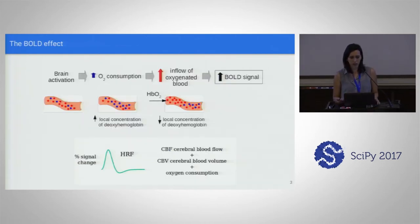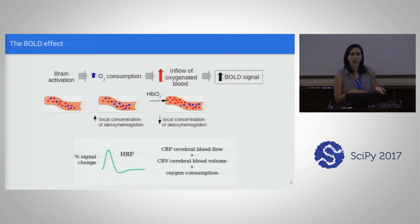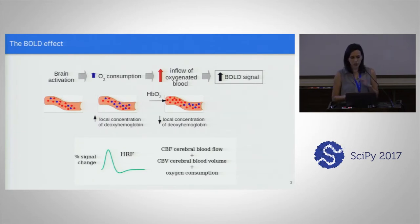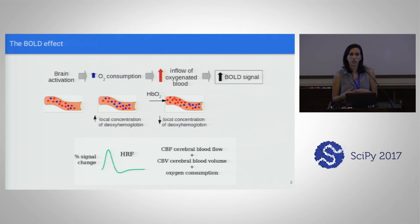What we really see with the BOLD effect is the changes in ratio between oxy- and deoxyhemoglobin — the two states of hemoglobin when carrying or not carrying oxygen. These two states have different magnetic properties, so changes in this ratio will cause local magnetic disturbances that the MRI scanner will detect. This ratio changes when there's brain activity because there's oxygen consumption, and then there's an inflow of oxygenated blood, which makes the BOLD signal change.